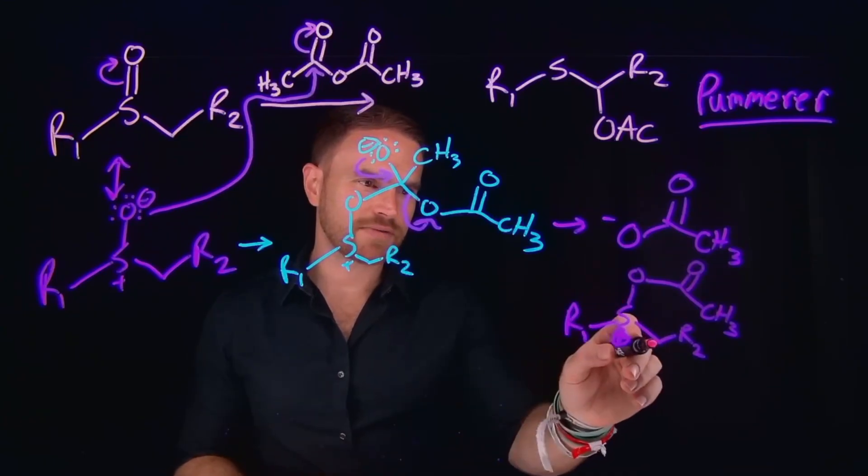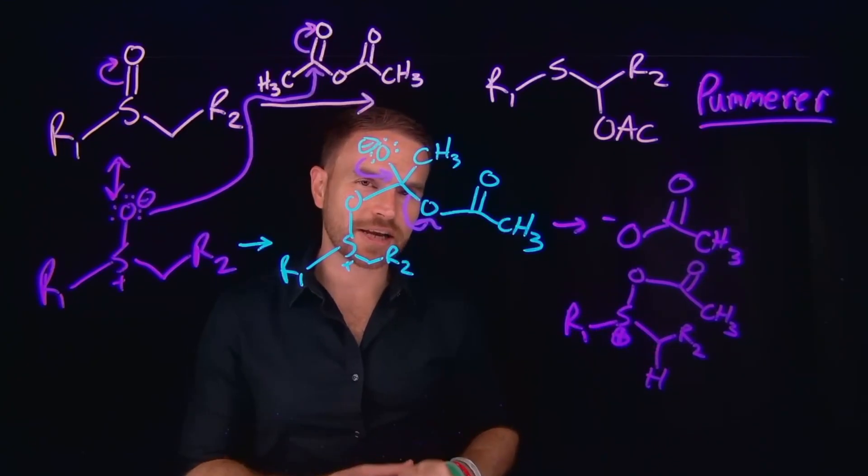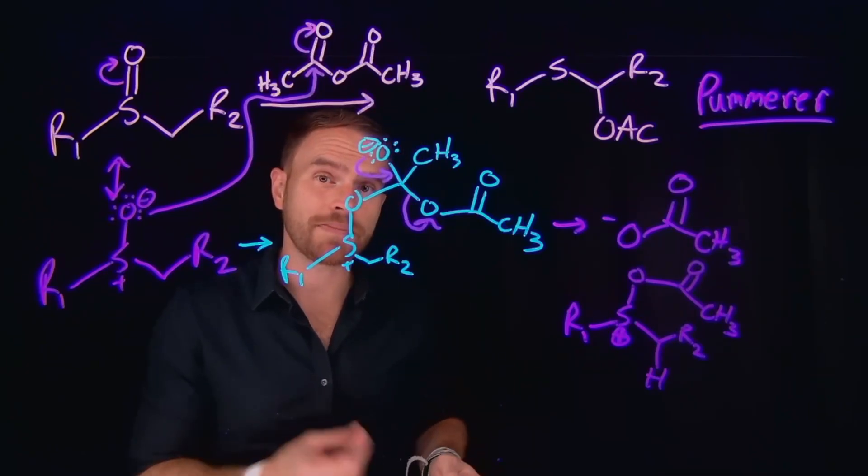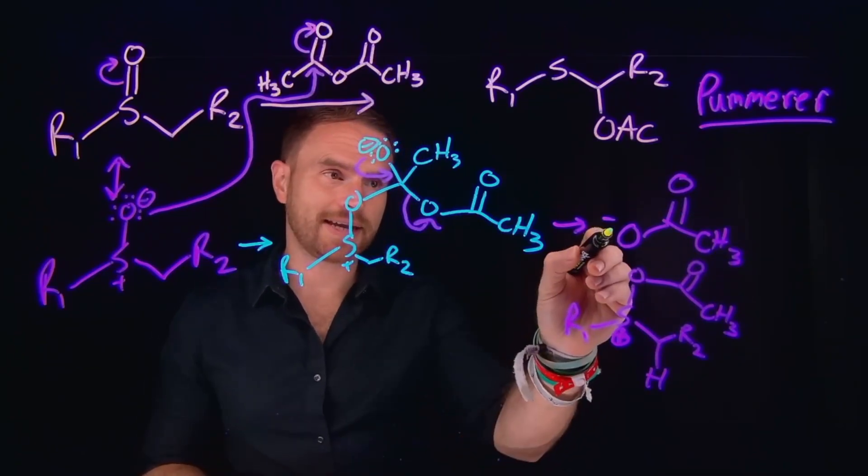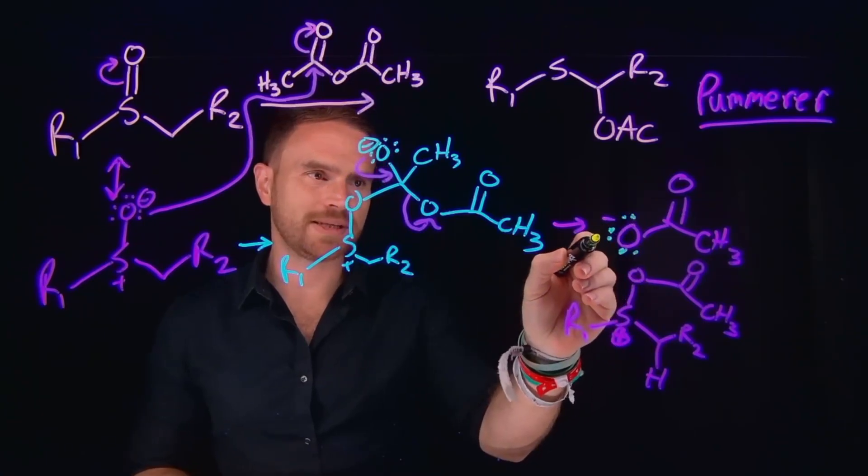And importantly, since this is positively charged, this what is effectively an alpha carbon hydrogen is going to be very acidic and susceptible to being deprotonated. And remember, we generated acetate at this position, which can act as a base that will be sufficient enough to come and deprotonate that.